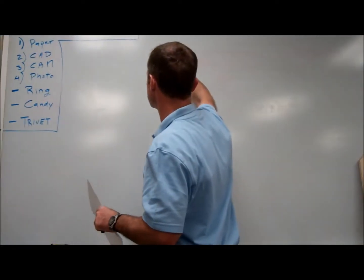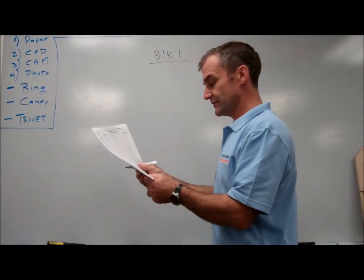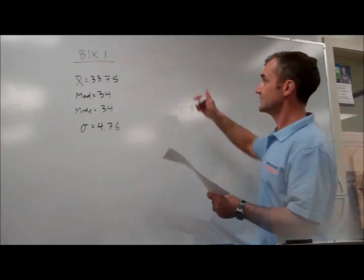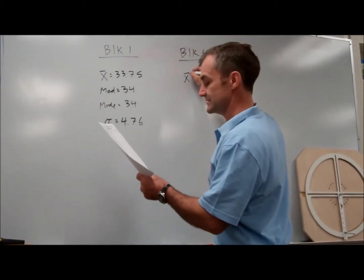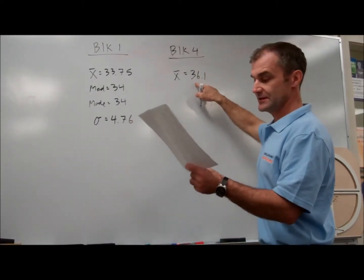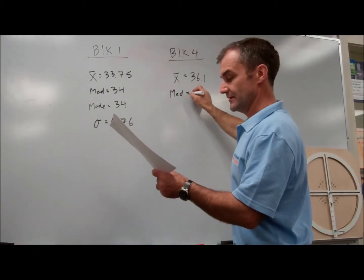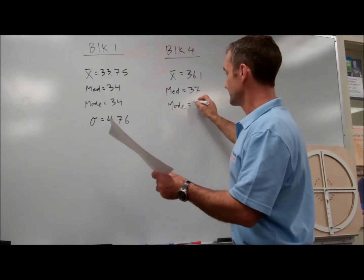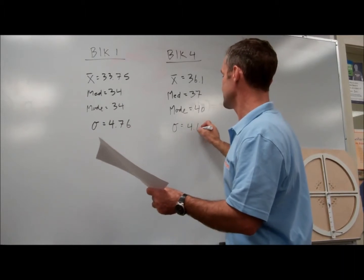This is block one, pre-calculus, and their average score out of 40, their average score is 33.75. And then here's block four, stats test. They have an average of 36.1, again out of 40, so 90%, a median of 37, and a mode of 40, and a standard deviation of 4.62.